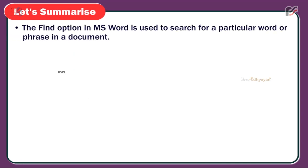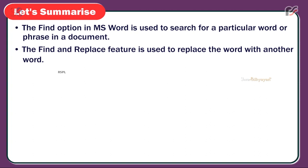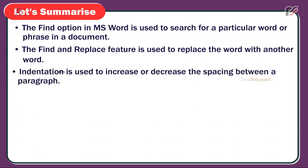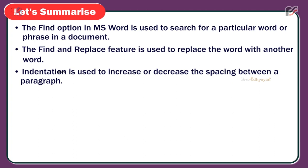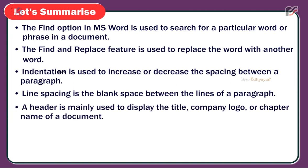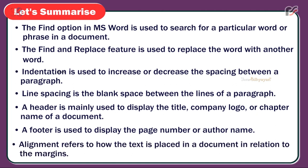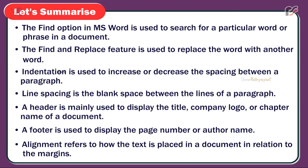Let's summarize. The Find option in MS Word is used to search for a particular word or phrase in a document. The Find and Replace feature is used to replace a word with another word. Indentation is used to increase or decrease the spacing between a paragraph and the margins. Line spacing is the blank space between the lines of a paragraph. A header is mainly used to display the title, company logo, or chapter name of a document. A footer is used to display the page number or author name. Alignment refers to how the text is placed in a document in relation to the margins.